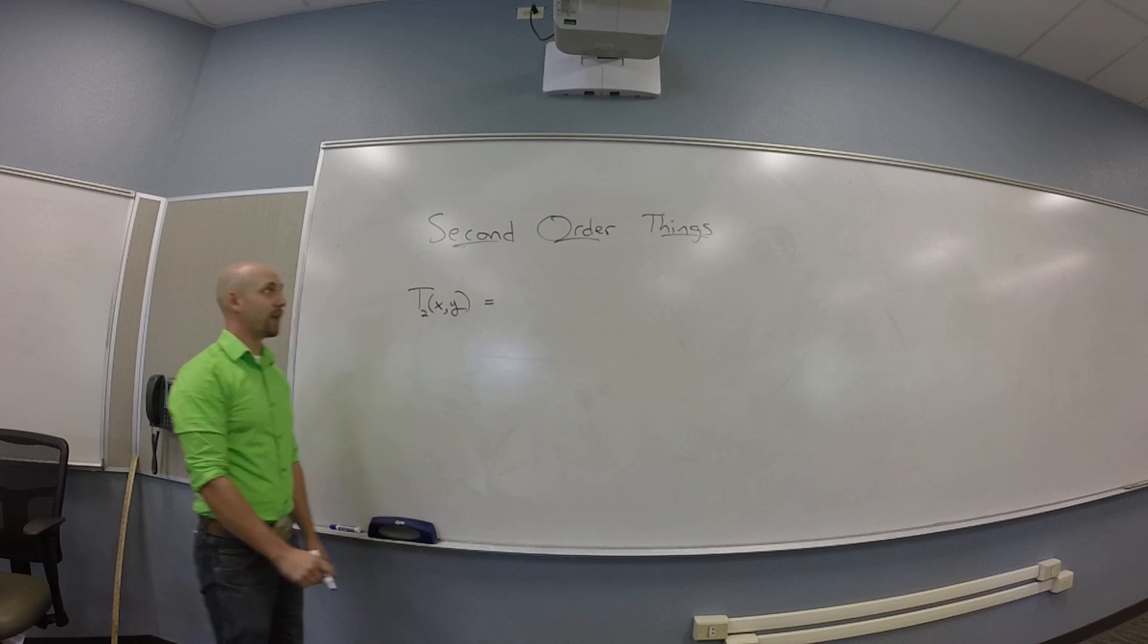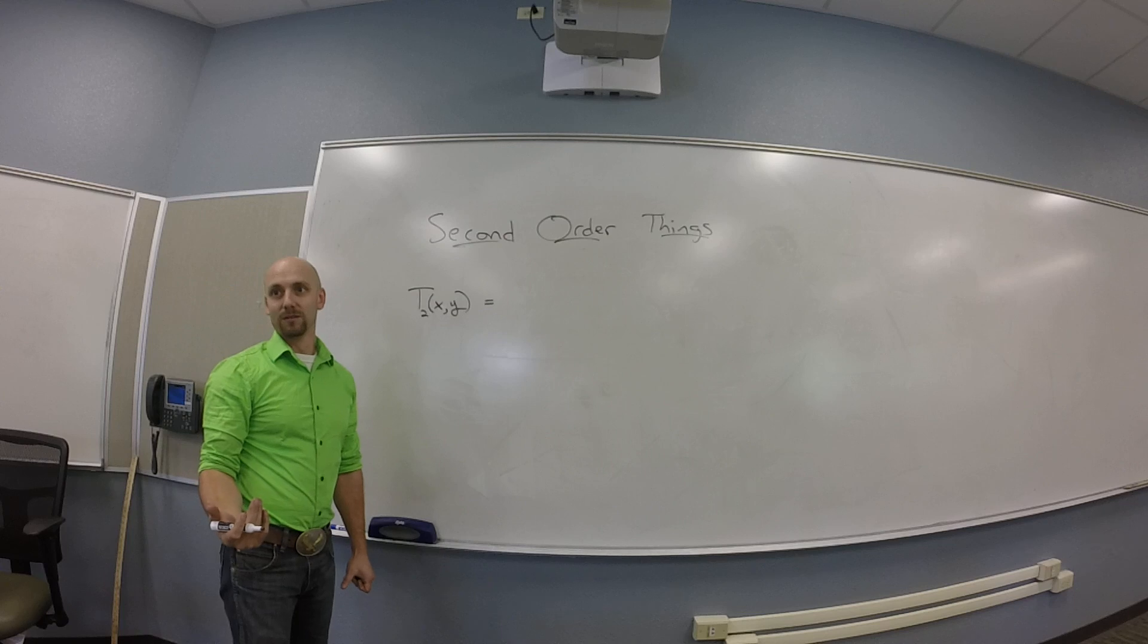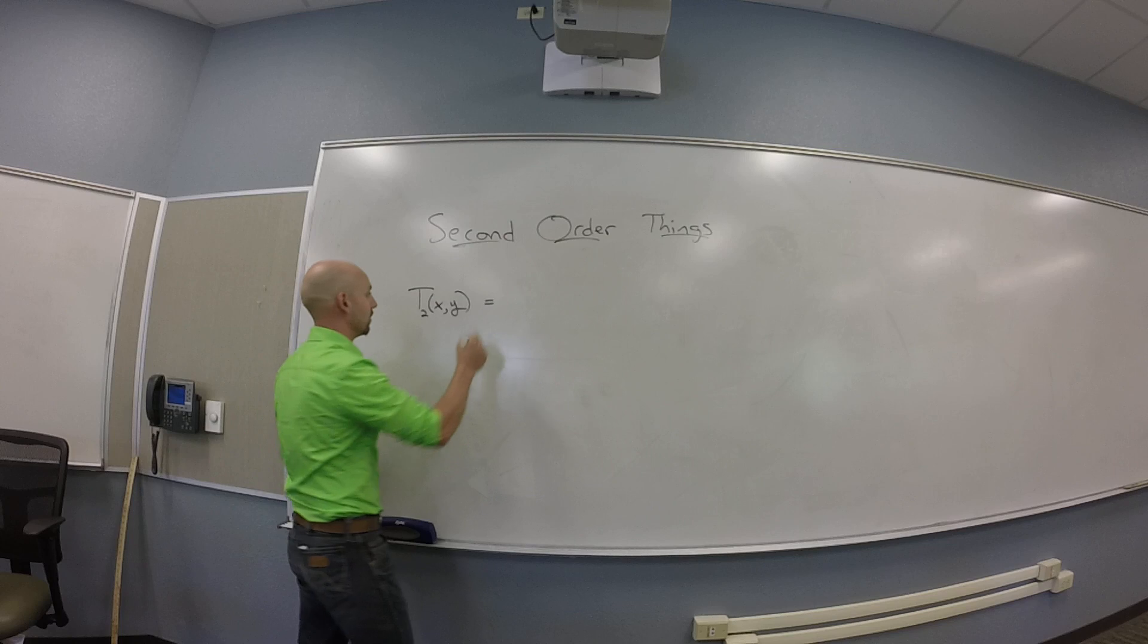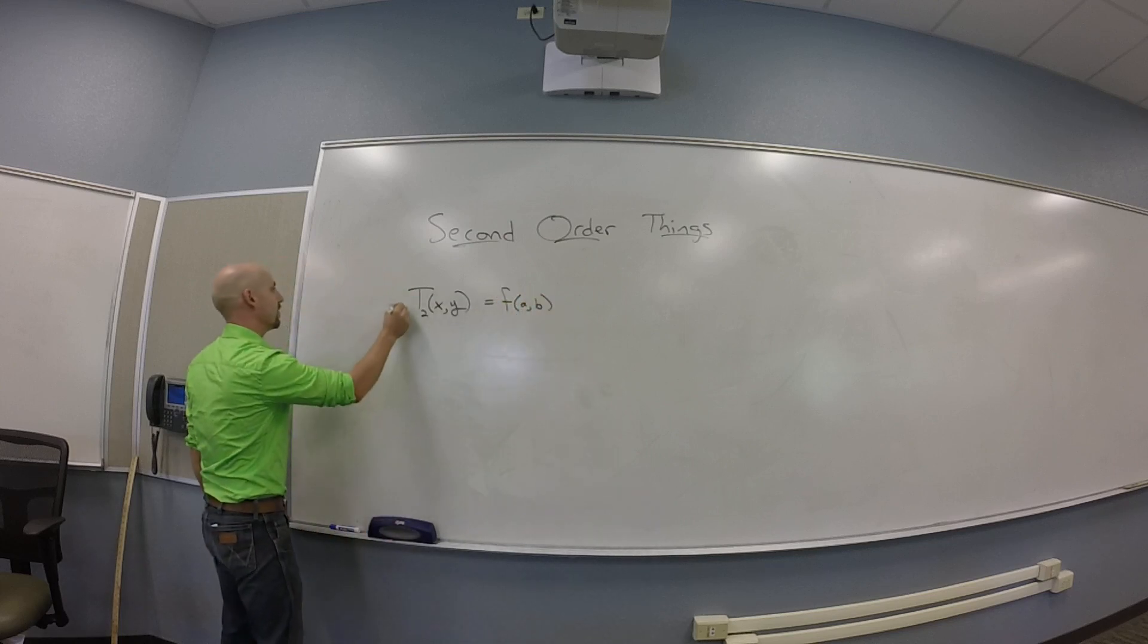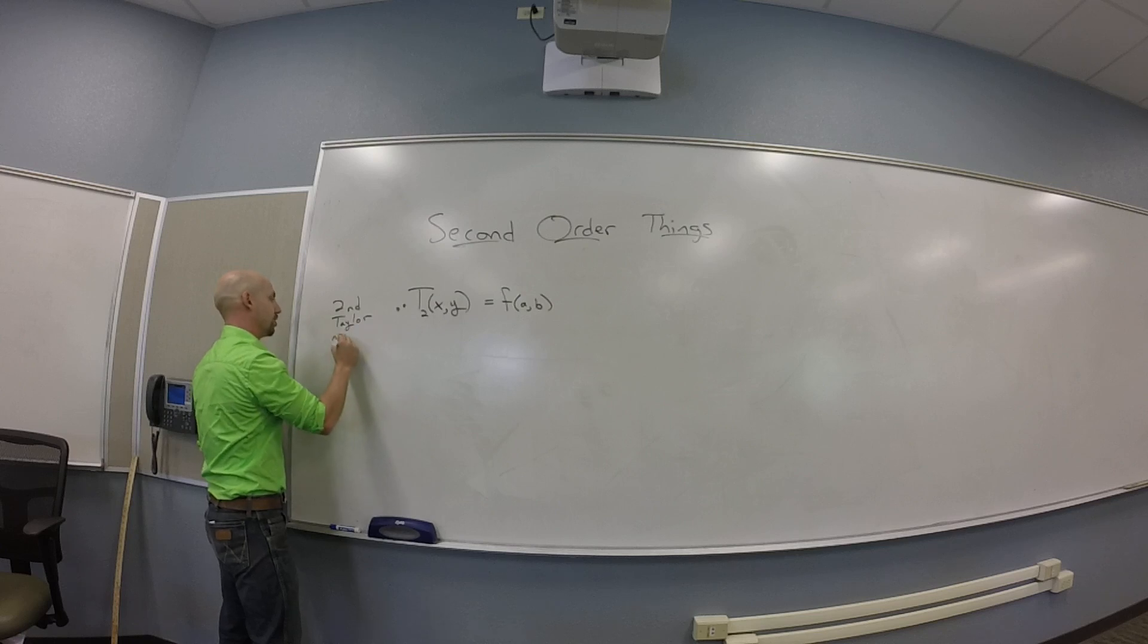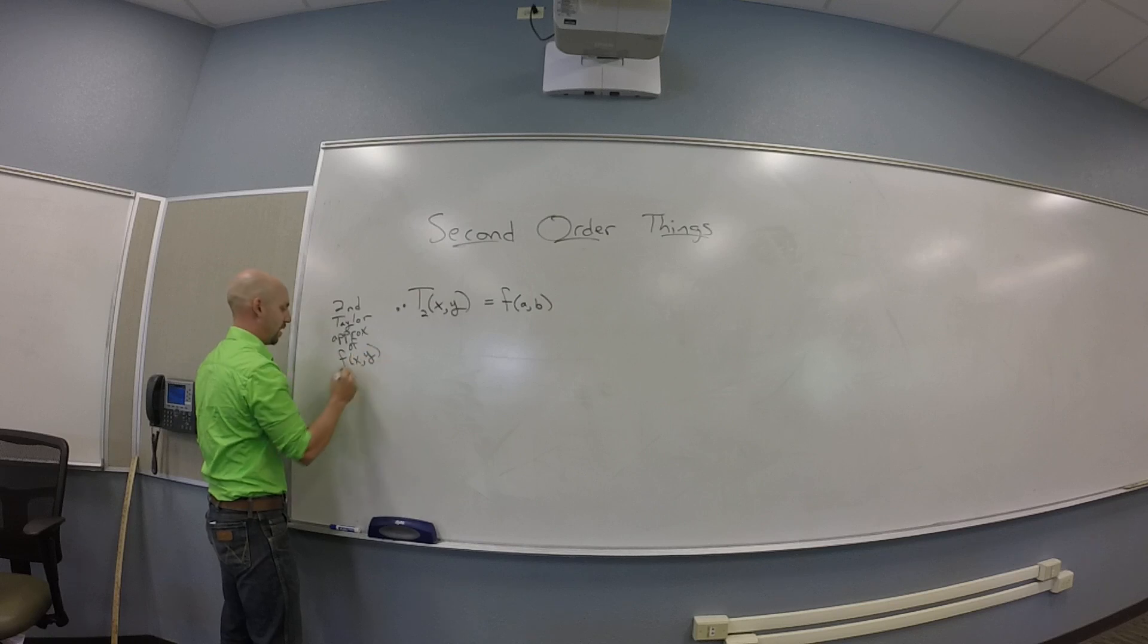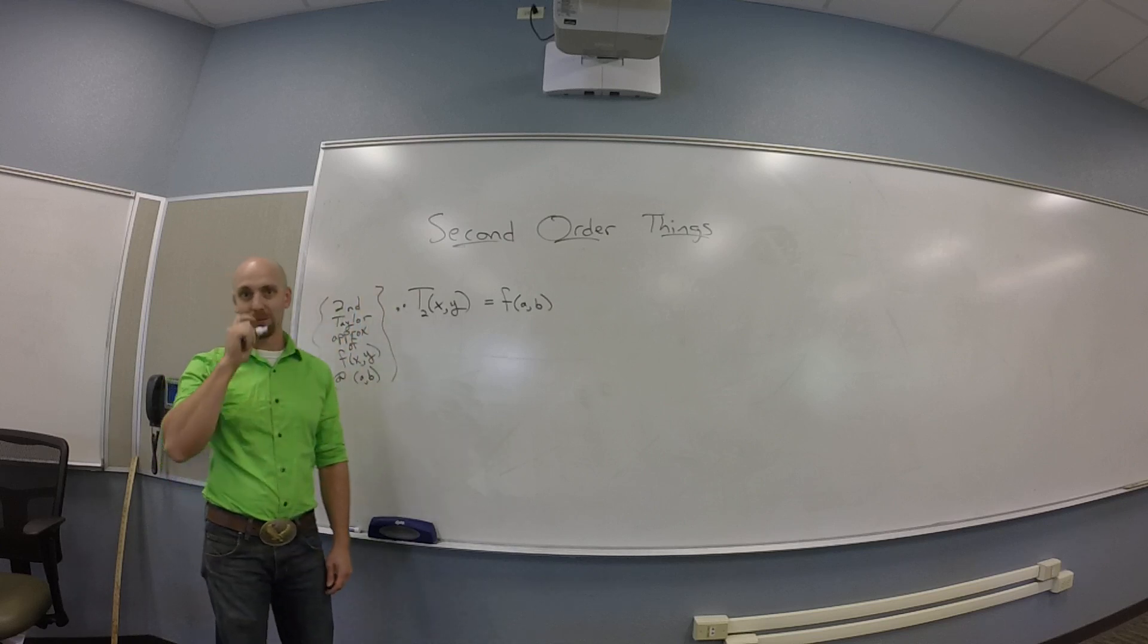So the way we ought to do that is we ought to start with our dumbest guess, which is evaluating at a point. So I'm going to evaluate at the point AB. This is going to be a second order Taylor approximation of F of X and Y at the point A comma B. So that's kind of the object we're trying to build.